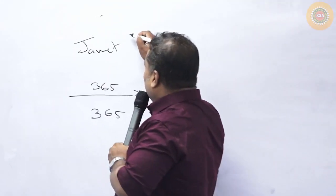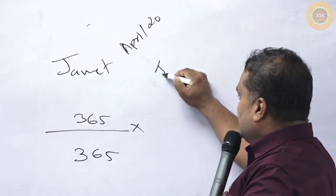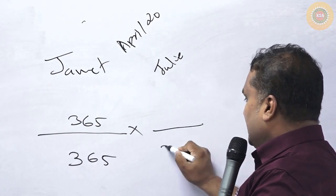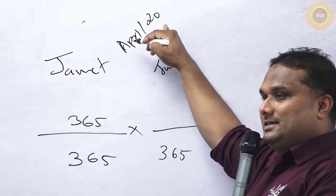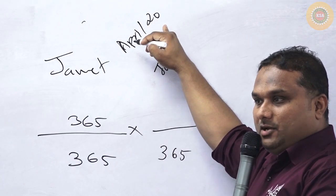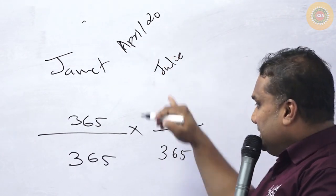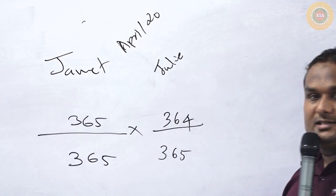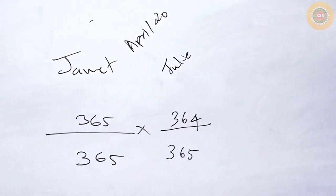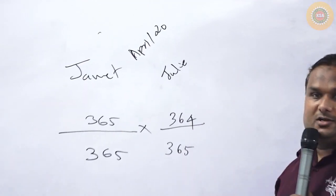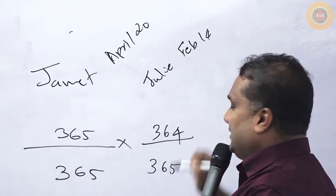The second person is Julie. Julie's birthday could be any of the 365 days, except — her birthday could be any of the remaining 364 days, excluding 20th April. Because if her birthday is on 20th April, then their birthdays are not on different days. Let's suppose Julie's birthday is on 14th February.